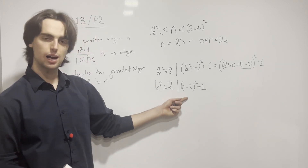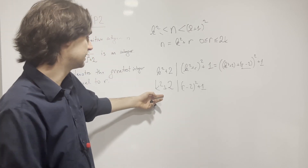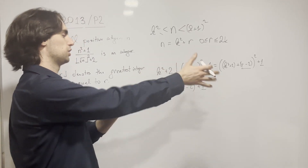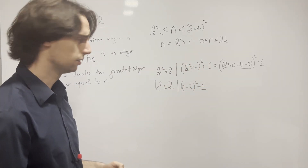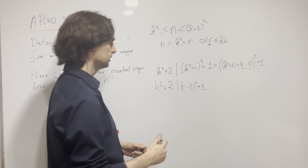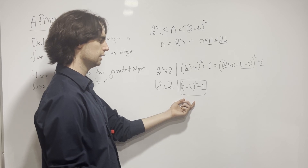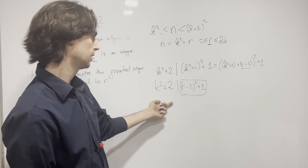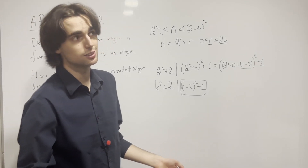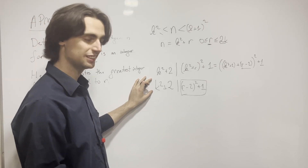What do we do now? I invite you to pause for the next 5 to 10 minutes and figure out what you should do now that you have this divisibility relationship. R is less than or equal to 2k and greater than or equal to 0. So this thing — (r − 2)² + 1 — can't be much greater than k² + 2. Divisibility: a divides b means there exists a c such that a times c equals b. Pause for about 5 minutes and think about what that implies here.